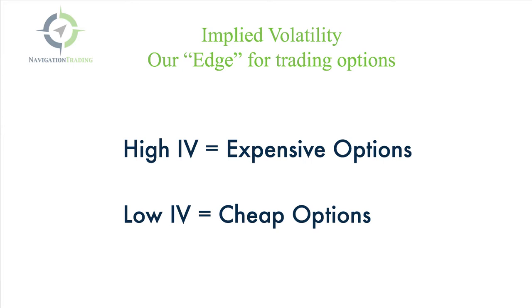Volatility is simply the magnitude of a stock's price swings. A stock has low volatility if it doesn't move very much, and it has high volatility if it has big price swings. Implied volatility gives you a future expected volatility of the underlying symbol that you're trading. If a stock has high implied volatility, the options on that stock are expensive. If the stock has low implied volatility, the price of the options are cheap.